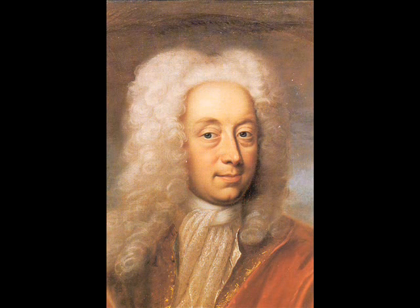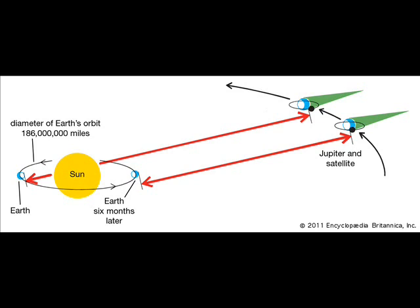Ole Rømer decided to take it upon himself to try to get the right answer. He used Jupiter's moons and the time the light should hit them and the time we should see it as his guides. He then measured the difference in time that it took to hit the telescope and the actual time the light hit the moon. He came up with an answer of about 214,000 km per second.